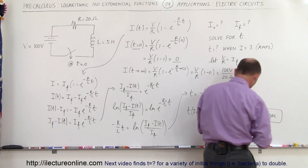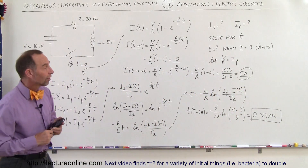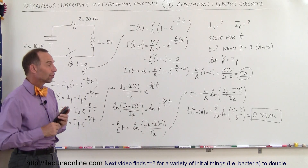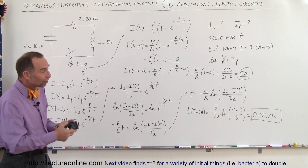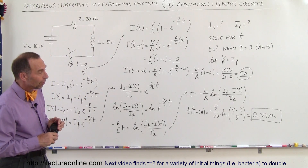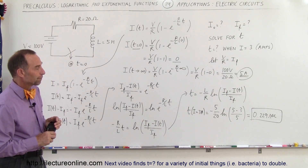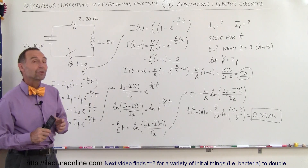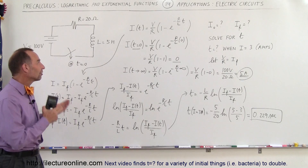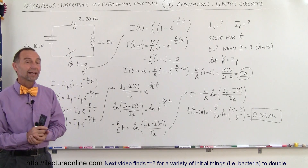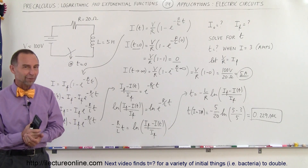It takes 0.229 seconds for the current to reach 3 amps. The final value is 5 amps, which would take a little more than a fraction of a second to reach. That's how we figure out the current in the circuit using logarithmic and exponential functions.